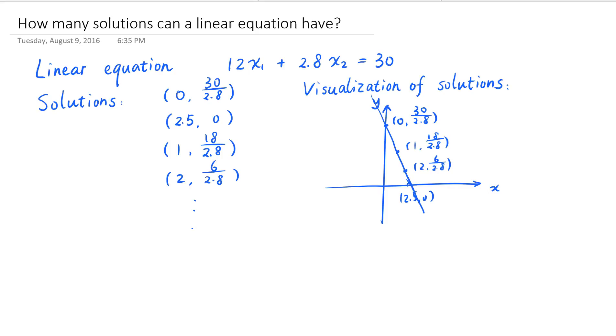In fact, you can show that every point on this line as a 2-tuple is a solution to this linear equation. And on the other hand, any solution to this linear equation as a 2-tuple is a point on this straight line. That's because the equation of this straight line is exactly 12 times x plus 2.8 times y is equal to 30. I'm going to leave it to you to show that on your own.